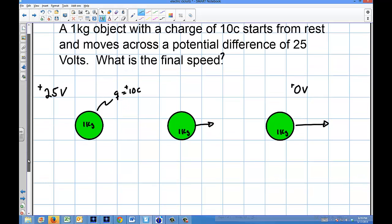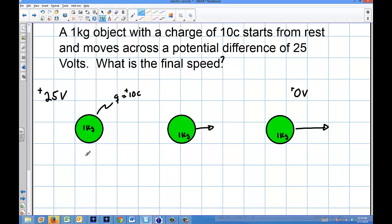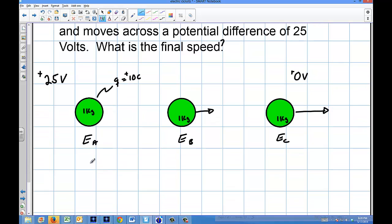So how do I find what that speed is? Well, I can use conservation of energy. If I had energy of A here, energy of B here, and energy of C here, all the energies are going to be equal, it's conservation of energy.